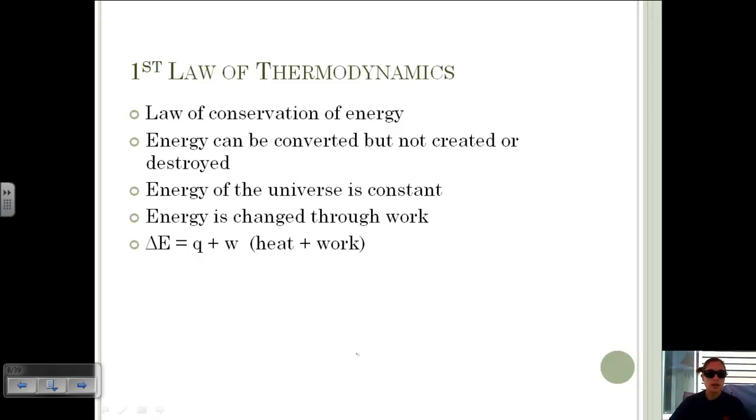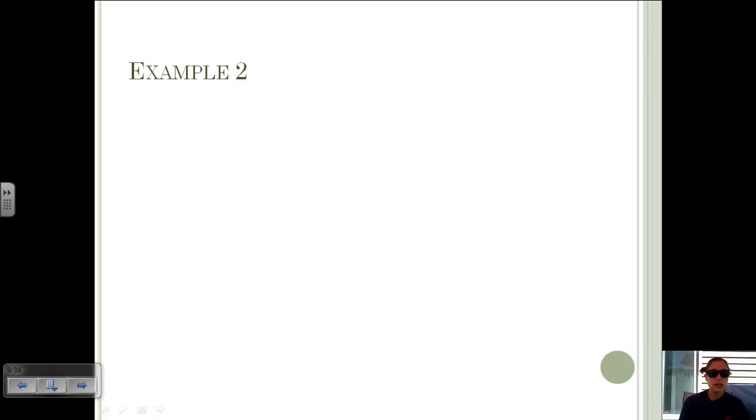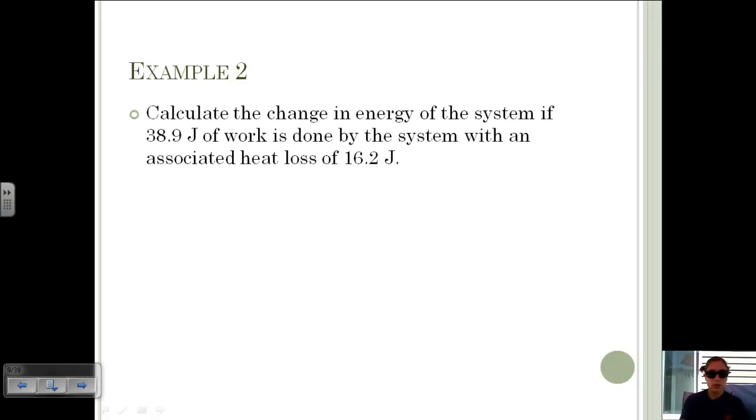We're incorporating that energy is heat and work into an equation. We know that delta E is equal to Q plus W. Q represents heat and W represents work. If the system loses energy, then delta E is negative. If the system gains energy, then delta E is positive. We can look at that for work and for heat both.